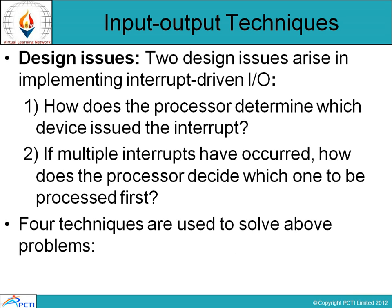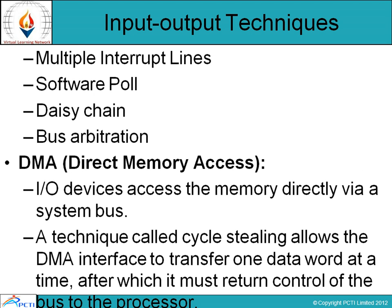There are two design issues in interrupt-driven input-output systems: first, how does the processor determine which device issued the interrupt; and second, if multiple interrupts have occurred, how does the processor decide which one to process first. The four technical problems associated with this technique are: Multiple interrupt lines, Software polling, Daisy chain, and Bus arbitration.